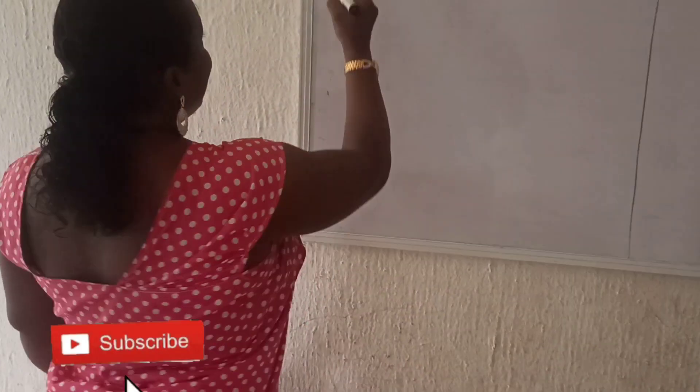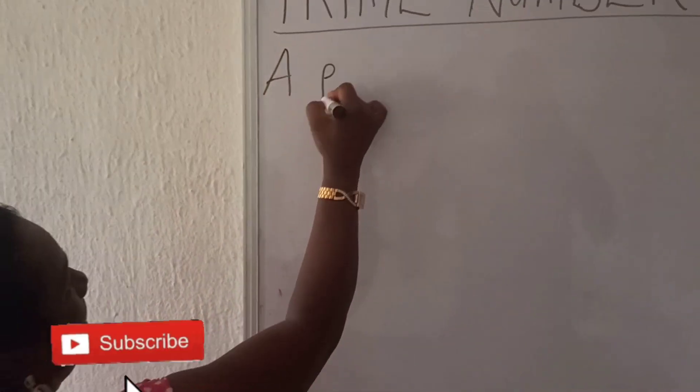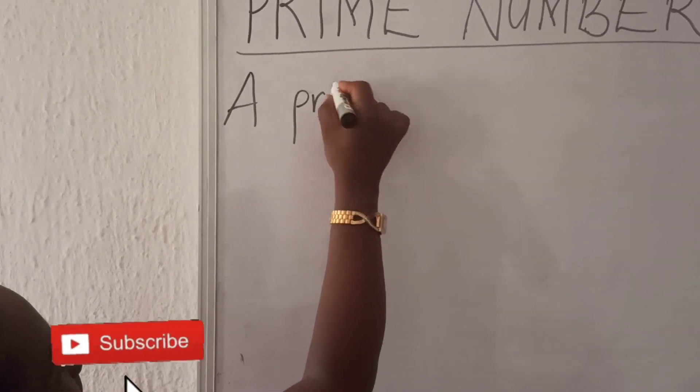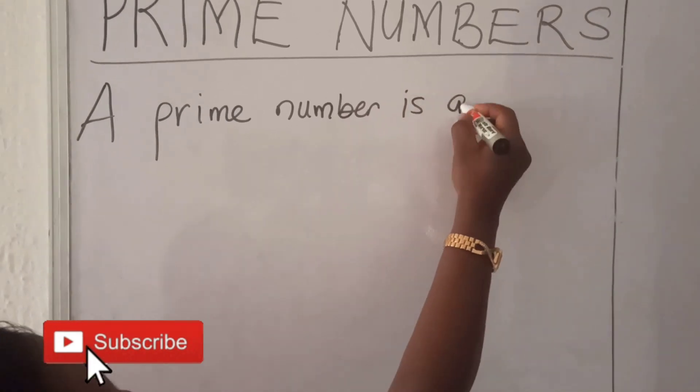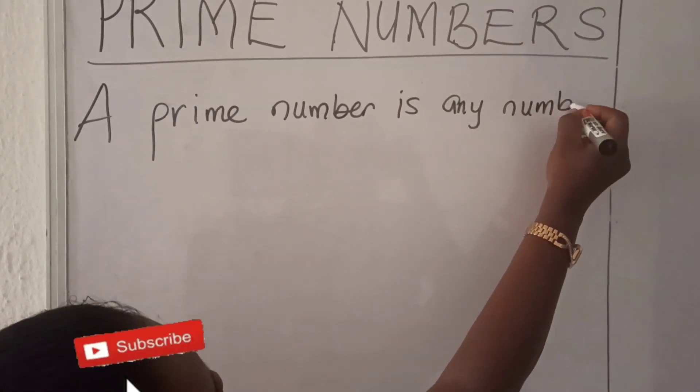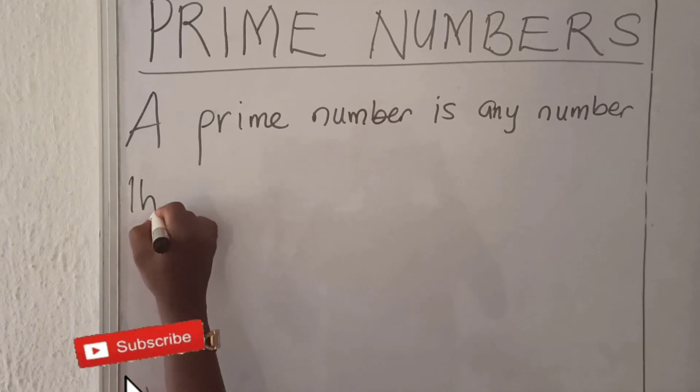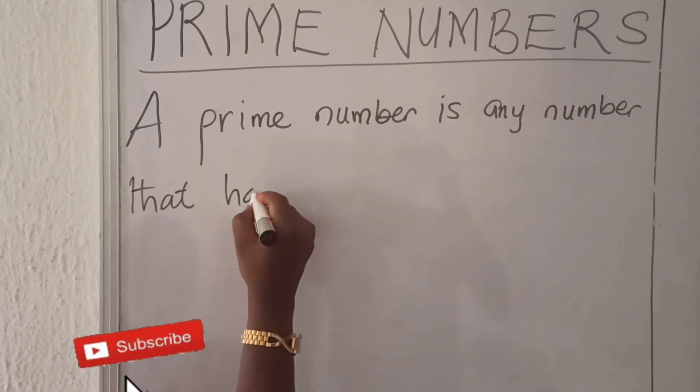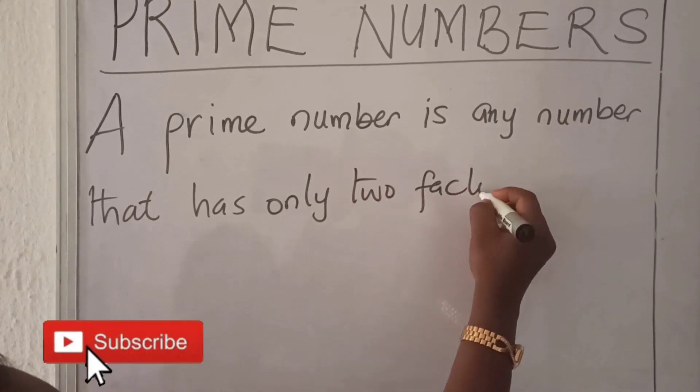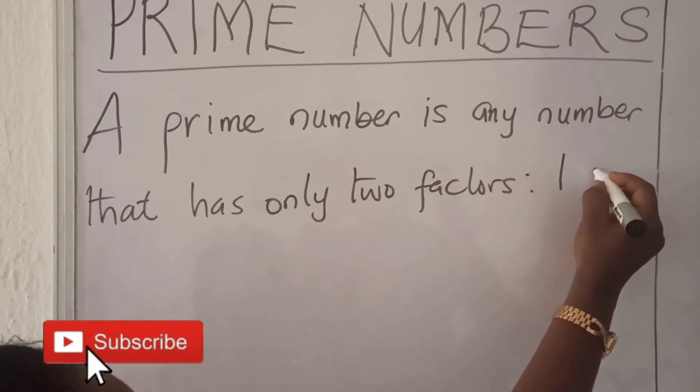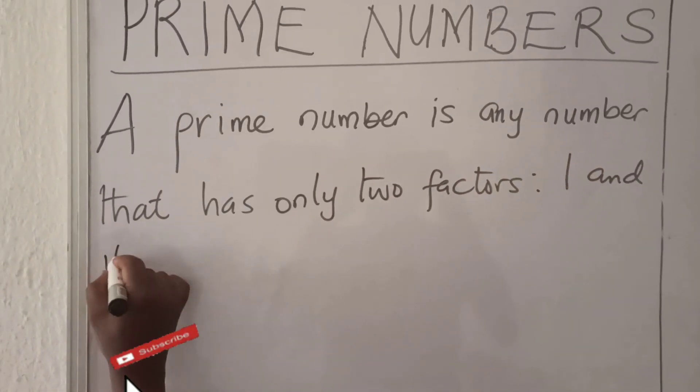We are going to learn what a prime number is. What is a prime number? A prime number is any number that has only two factors, one and itself.